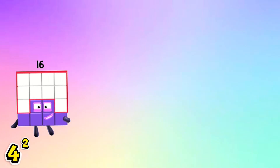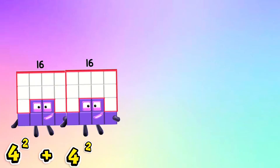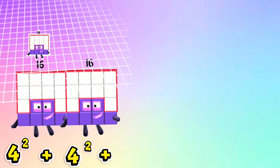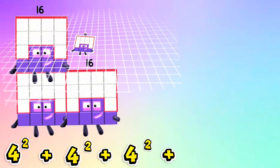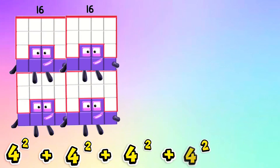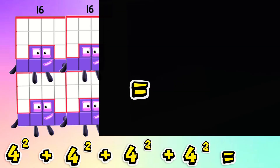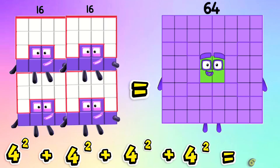4 squared plus 4 squared plus 4 squared plus 4 squared is equals to 64.